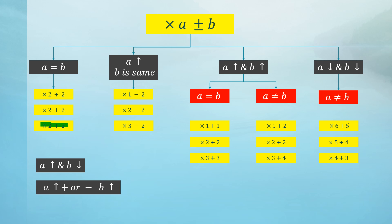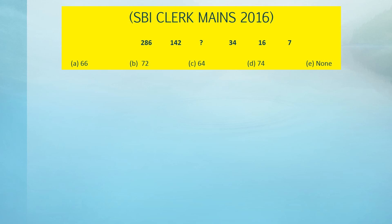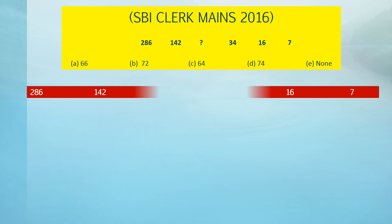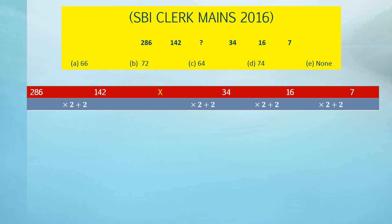Let us start the first question, asked in SBI Clerk Mains 2016. The numbers are 286, 142, x, 34, 16, and 7. As you can see, the difference in the initial part of the series is quite small compared to the final part, confirming there is a multiplicative factor. Let us try: 7 × 2 = 14, and 142 × 2 = 284, so 2 can be the multiplicative factor. Indeed, 7 × 2 + 2 = 16, and the additive factor is +2.